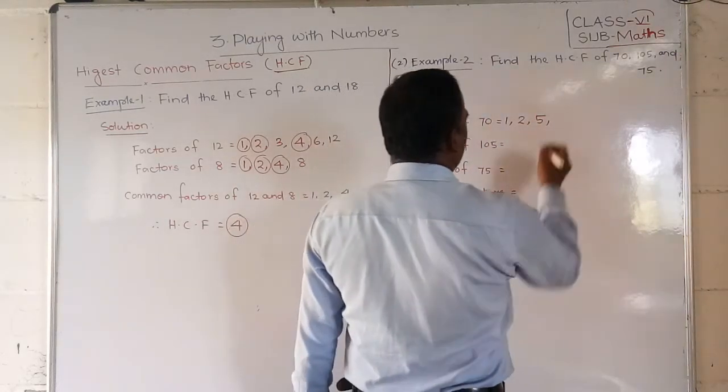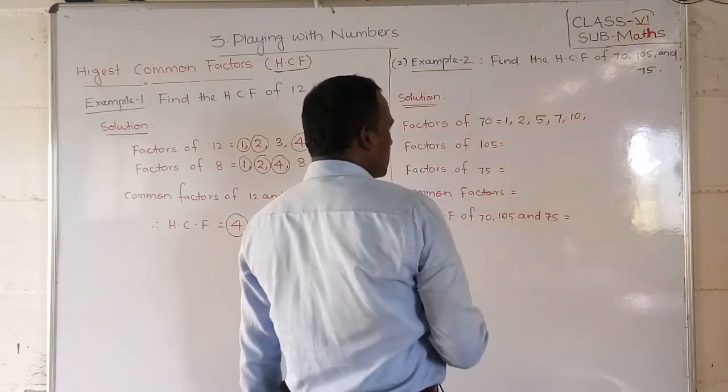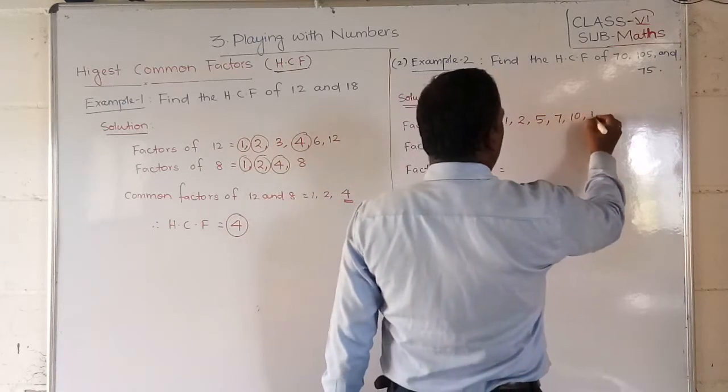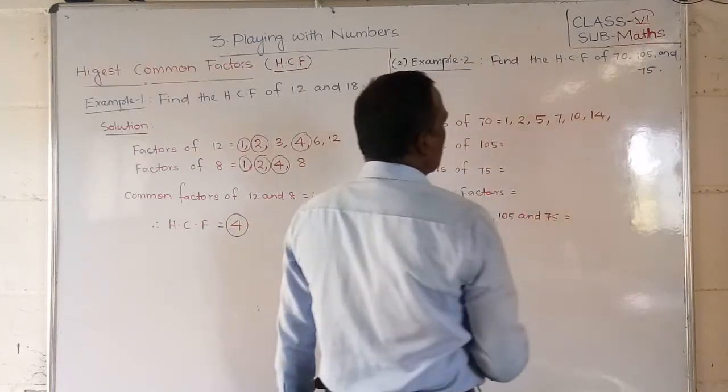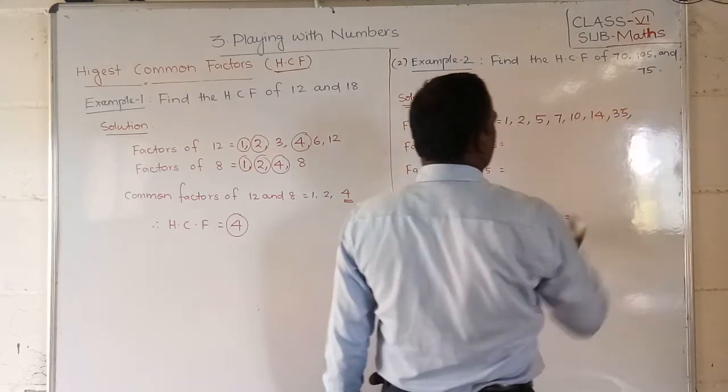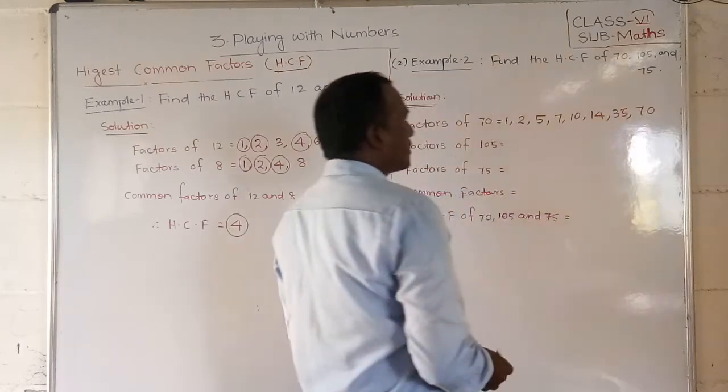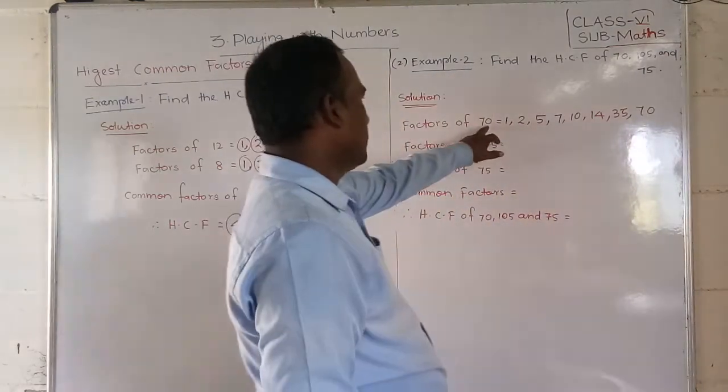Next, 6 is not possible. 7 times 10 is 70. So 7. Next, 10. Next, 14. Next, 35. Next, 70. So these are the factors of 70.